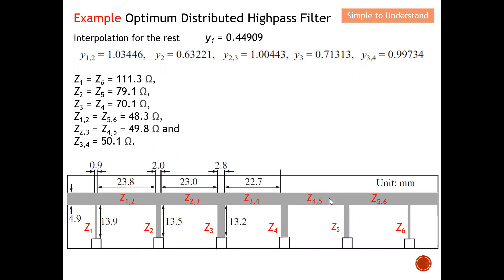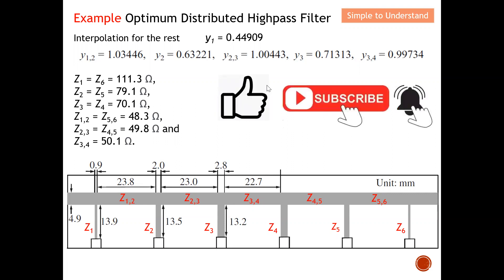After calculating all the impedance values, you can design the microstrip line as shown. The connecting line impedance is quite close to 50 ohms, so visually the widths will appear similar to a standard 50-ohm line — there will be only a slight difference in width. Some adjustment to the connecting line width is still needed. This is essentially how we calculate the optimum distributed high pass filter. If you find this video helpful, please consider liking it, subscribing to the channel, and turning on your notification bell.